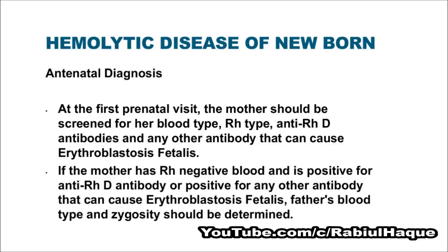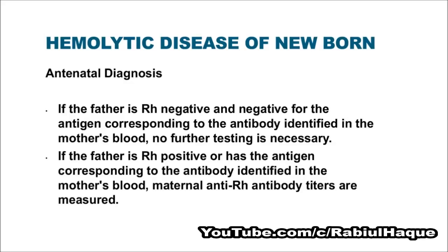If the mother has Rh negative blood and is positive for anti-RHD antibody or positive for any other antibody that can cause erythroblastosis fetalis, the father's blood type and zygosity should also be determined. If the father is Rh negative and also negative for the antigen corresponding to the antibody identified in the mother's blood, no further testing is necessary. But if the father is Rh positive or has the antigen corresponding to the antibody identified in the mother's blood, maternal anti-Rh antibody titers are measured.